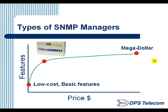Now let's look at the types of SNMP managers. This is a graph of price versus feature set. On the lowest end, you'll see low cost, basic feature SNMP managers — sometimes these are even free, but the feature set is very basic. You generally get a single user, a list of traps that have come in, and not much else. On the opposite end of the curve are the mega dollar SNMP managers. These definitely have big feature sets, but they also have big price tags. There aren't many companies that can justify what may be a half million dollar purchase just for an SNMP manager — most companies simply aren't big enough.